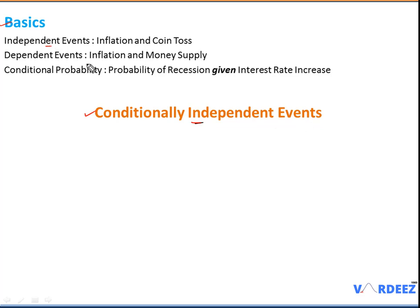The very first thing is independent events. Two events, A and B, are independent if the occurrence of one event does not have any effect on the occurrence of the other event. For example, inflation and coin toss are pretty much independent of each other. If I toss a coin, whatever the outcome — heads or tails — it does not have any effect on the inflation of a particular economy. Similarly, inflation will have no effect on the outcome of the coin toss. Knowing the outcome of event A will not affect the outcome of event B.